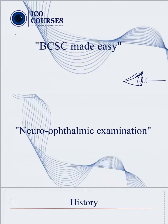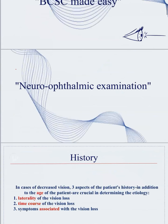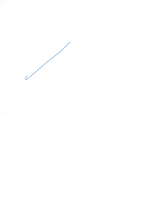This is the first section of this session. In the second part, I'll talk briefly about neuro-ophthalmic examination. Regarding neuro-ophthalmic examination, there are two main parts: the history part and the examination part. In the history part, I have to answer three questions: first — is the lesion unilateral or bilateral? Second — regarding the onset. Third — regarding the associated symptoms. This is the framework for any case of decreased vision of unknown cause.